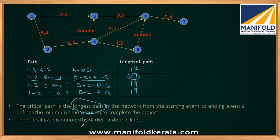The critical path is generally denoted by a bold or double line. The path B-C-E-G is the critical path. The events on this path are known as critical events, the path is known as the critical path, and the total completion time for the project will be the length of the critical path — which is 21 weeks.